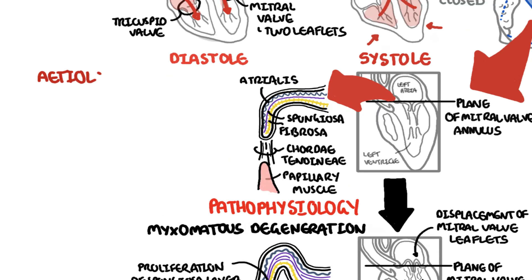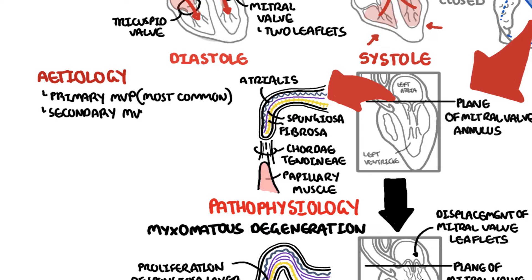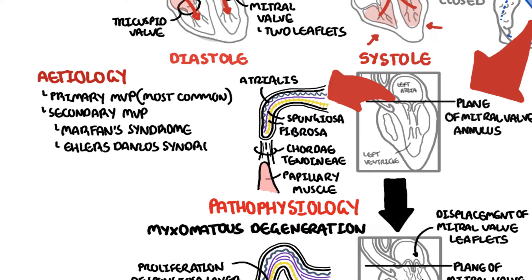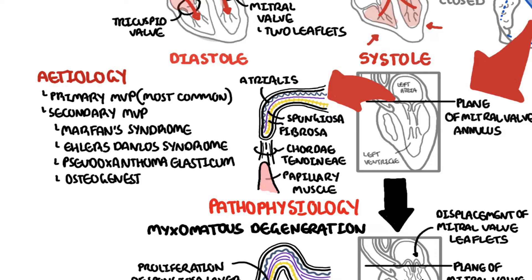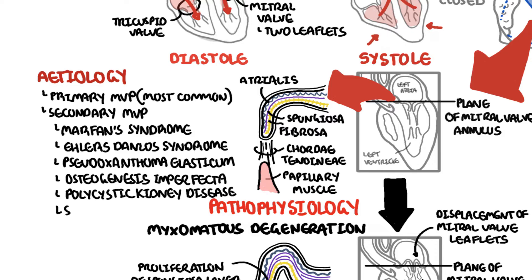The causes of mitral valve prolapse include primary mitral valve prolapse, which is the most common, and in which there is no underlying associated disease. Or there is secondary mitral valve prolapse, which is associated with other conditions, including mainly connective tissue diseases such as Marfan syndrome, Ehlers-Danlos syndrome, pseudoxanthoma elasticum, osteogenesis imperfecta, polycystic kidney disease, and systemic lupus erythematosus.